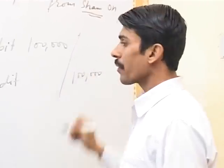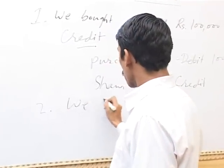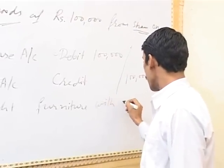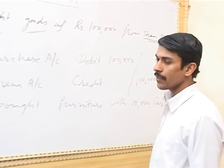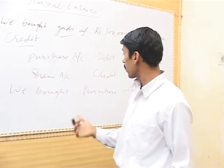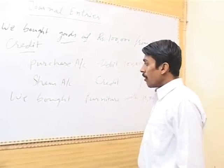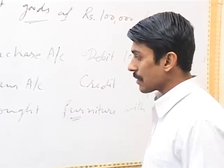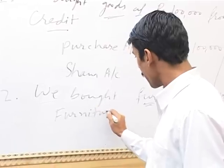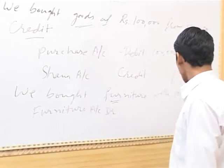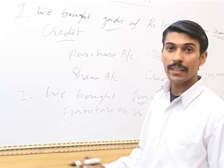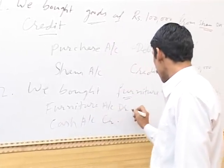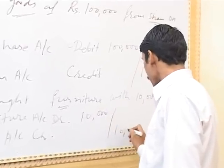One more example: we bought furniture for 10,000 cash. By paying 10,000 we have bought the furniture. Furniture asset will increase and cash asset will decrease. Increase in furniture asset — Furniture Account debit 10,000. Cash is decreased, so decrease in asset is credit — Cash Account credit 10,000.